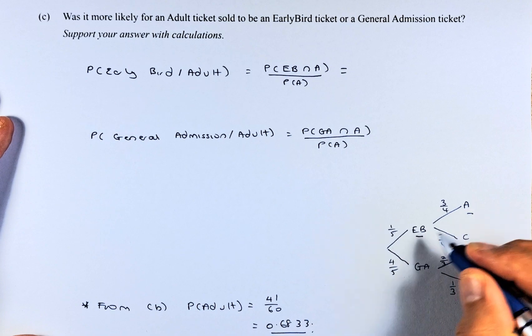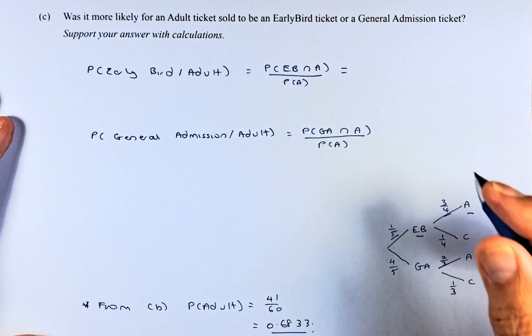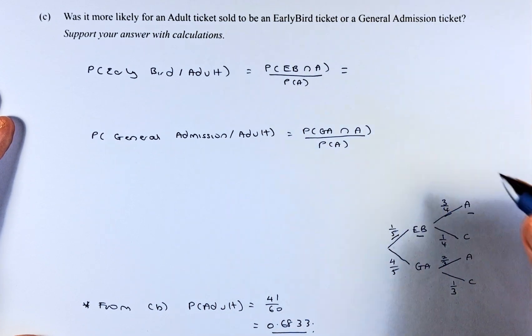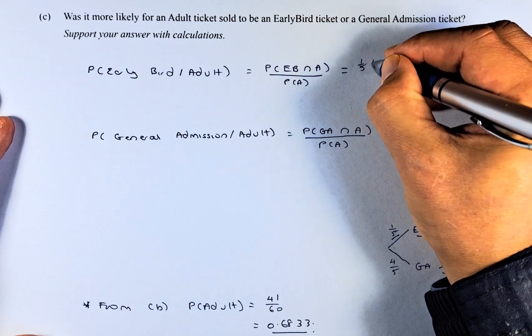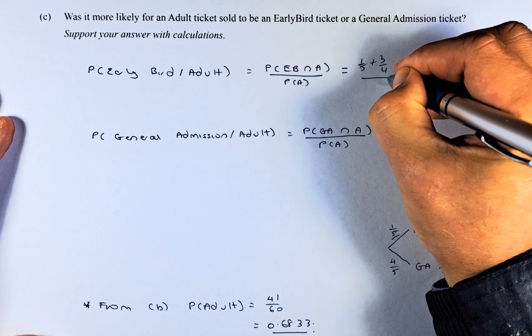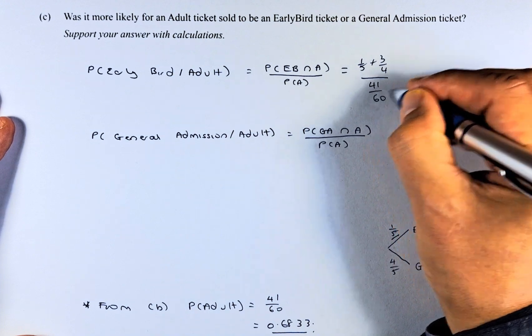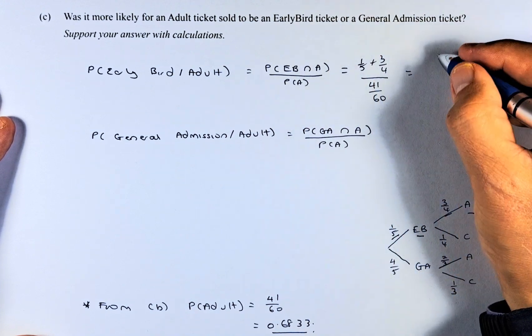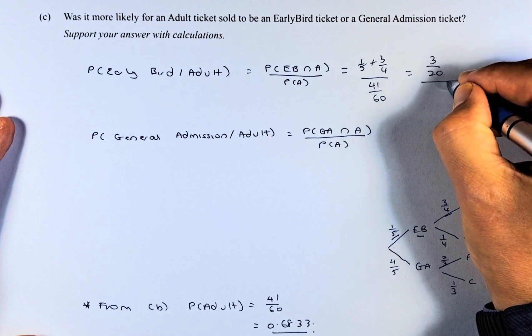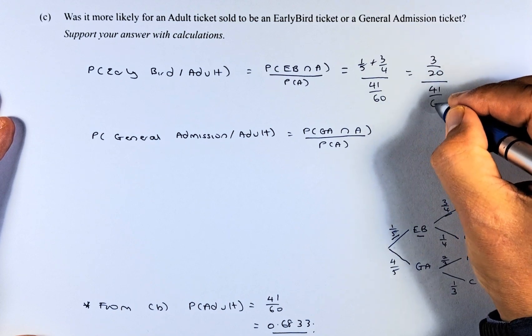So we put 1/5 times 3/4 in the numerator, and the denominator is 41 over 60. Now, 1/5 times 3/4 equals 3 over 20, divided by 41 over 60.